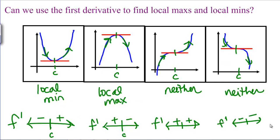All of these statements do assume that C is in the domain of our original function F, meaning that F of C is defined. You can't have a local maximum or a minimum when your original function isn't defined.